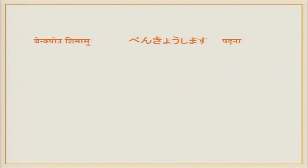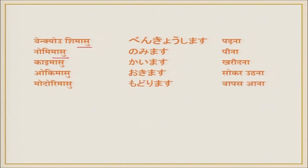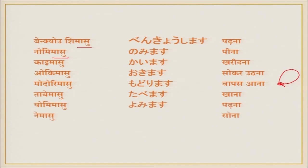Now let's practice some verbs. Here are some verbs for you. Repeat after me: Benkyou shimasu. Nomimasu. You will notice these are all in masu form. Nomimasu, kaimasu, okimasu, modorimasu. Modorimasu means: when you are somewhere and you come back to where you started — that is called modorimasu.